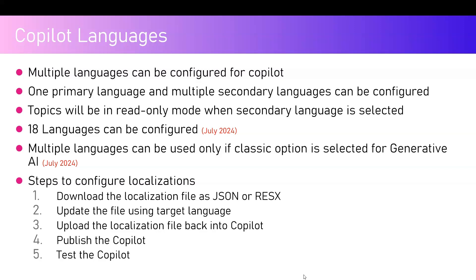One primary language and multiple secondary languages can be configured. However, multiple languages can be used only if the classic option is selected for generative AI, because the generative AI is currently in English only as of July 2024. That's why if you select the generative AI option, you will not be able to use multi-language for your bot.